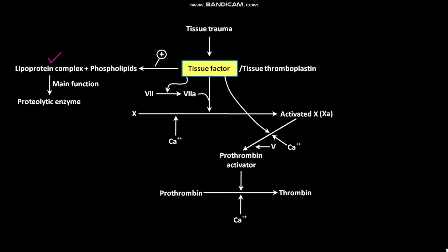At first, factor V in the prothrombin activator complex is inactive. But once clotting begins, thrombin starts to form and the proteolytic action of thrombin activates factor V. The activated factor V then becomes an additional strong accelerator of prothrombin activation.